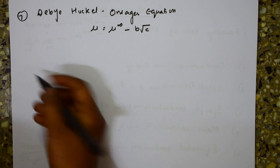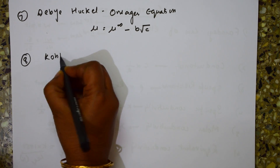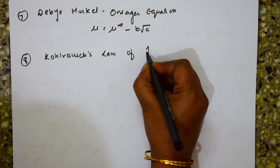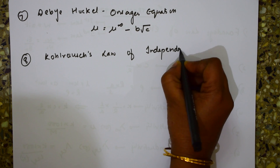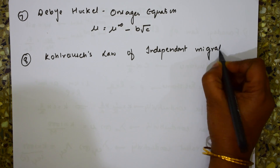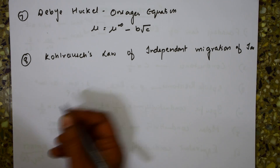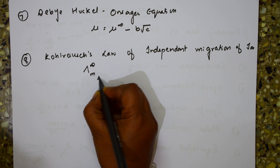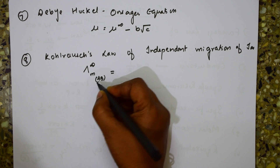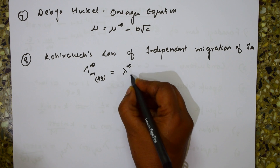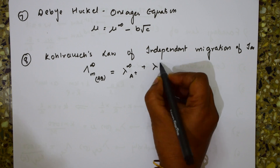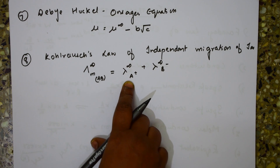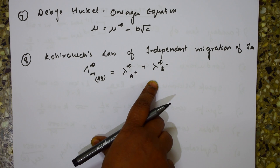The eighth formula is Kohlrausch's law of independent migration of ions. The formula for molar conductivity at infinite dilution of a compound AB is: μ_infinity(AB) = λ_cation + λ_anion, representing the sum of the limiting molar conductivity of the cation and the anion.